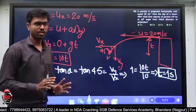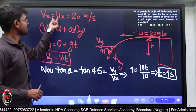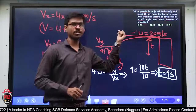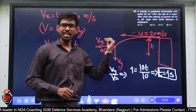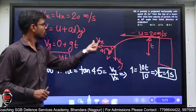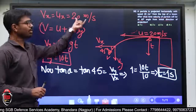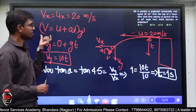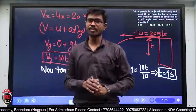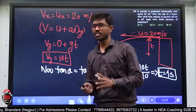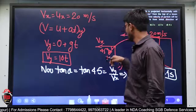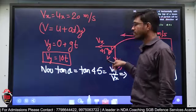Solution में — Vx is equal to ux। Horizontal velocity of projection, projectile motion में constant होती है, तो ux is equal to vx = 20 meter per second जो दिया था। इसके बाद v = u + at, यह kinematic equation है। इसको y direction के लिए लगाया है, तो velocity in y direction निकालनी है।